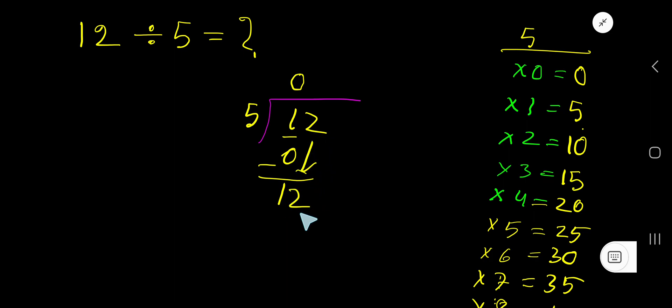Now 5 goes into this 12 how many times? 5 goes into this 12. Look, 3 times is 15, which is greater, so 2 times. Write 2. 2 times 5 is 10. If you subtract, you are getting 2.